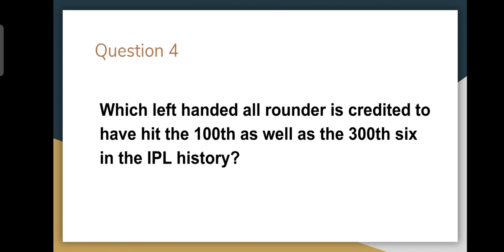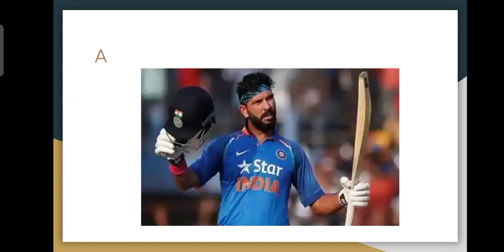Moving on to question number four — which left-handed all-rounder is credited with hitting 100 as well as 306 in IPL history? Being a left-handed all-rounder narrows the window considerably. The answer is indeed Yuvraj Singh. Many of you got it correct.